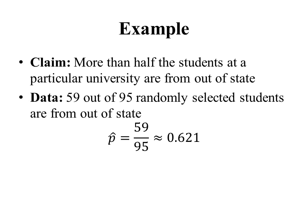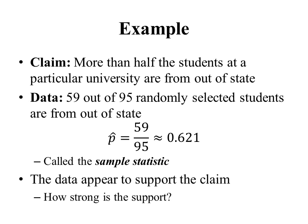We might be tempted to say this data proves the claim, but we have to remember this is a sample proportion, not a population proportion. This sample proportion is an estimate of the population proportion we're making a claim about, so the data neither prove nor disprove the claim. In the context of a hypothesis test, this sample proportion is also called a sample statistic. The sample statistic appears to support the claim, but we might ask: how strong is that support? Hypothesis testing allows us to measure the strength of this support.